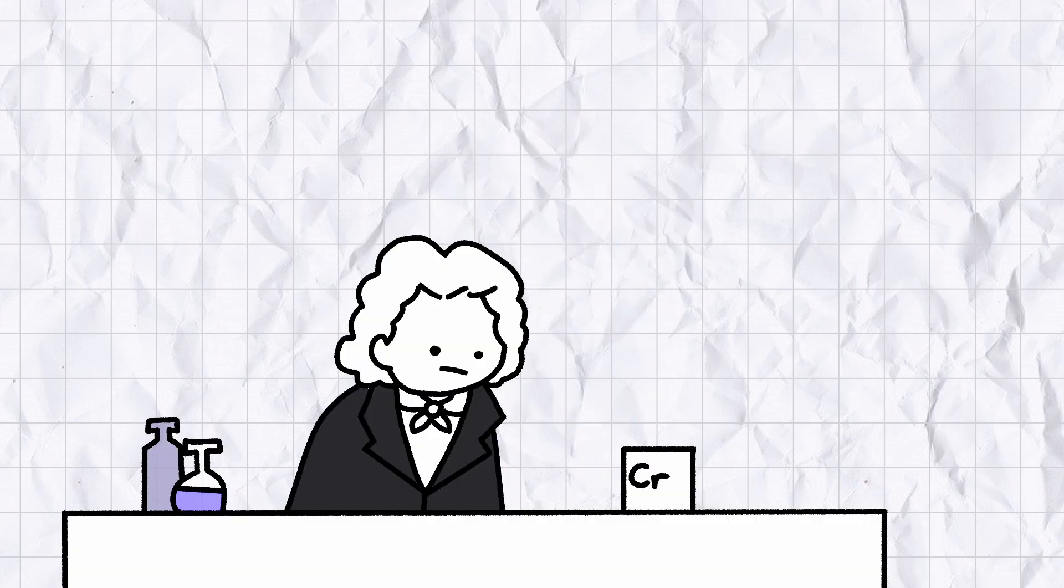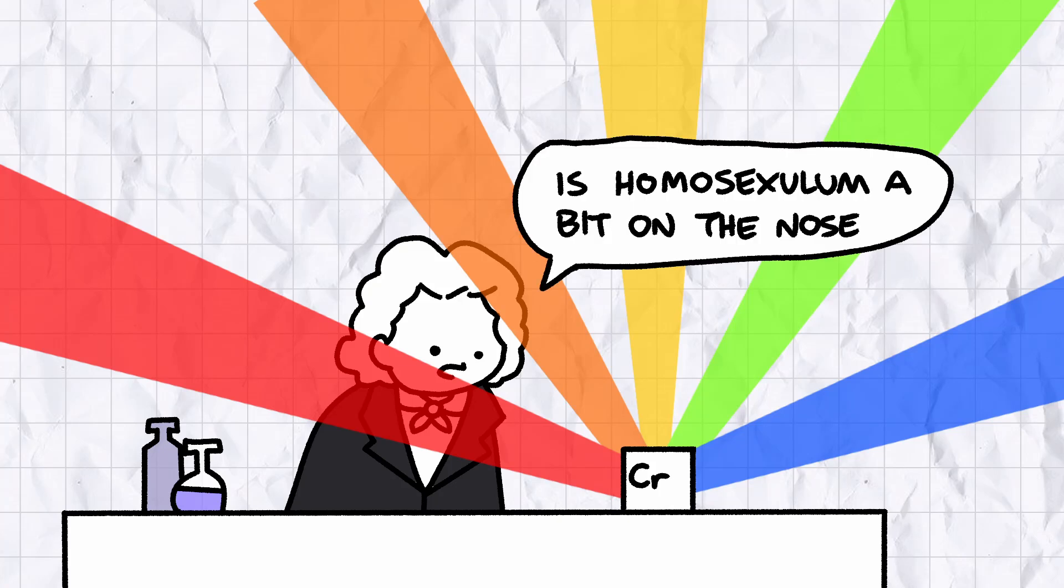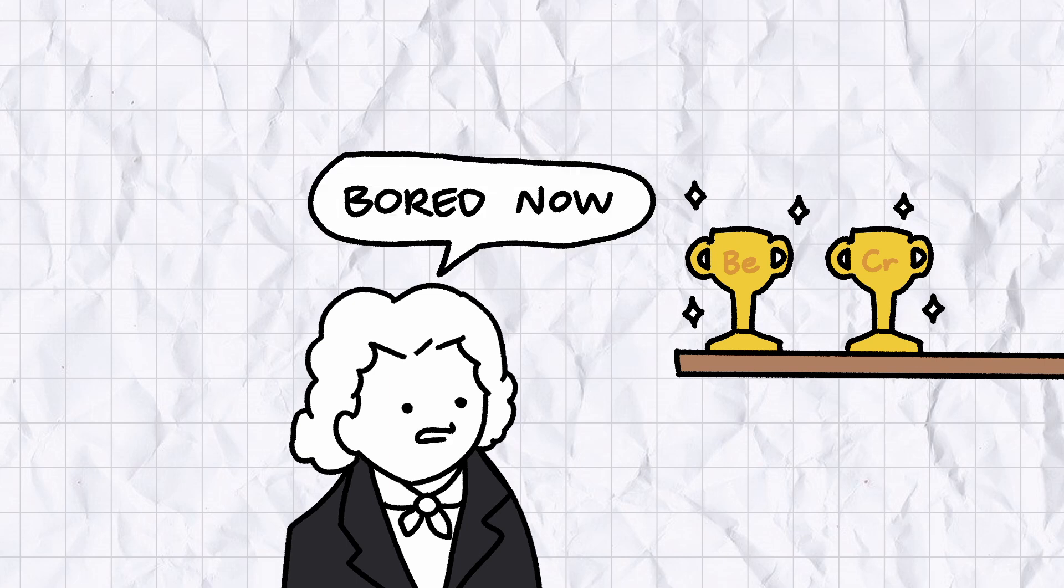After extracting all the lead from the mineral, Vauquelin discovered an element in the remaining mixture that produced an array of highly chromatic compounds. Yeah, I can't imagine that took long to name. Vauquelin had discovered two elements by the age of 35, but he didn't spend the rest of his career resting on his laurels.